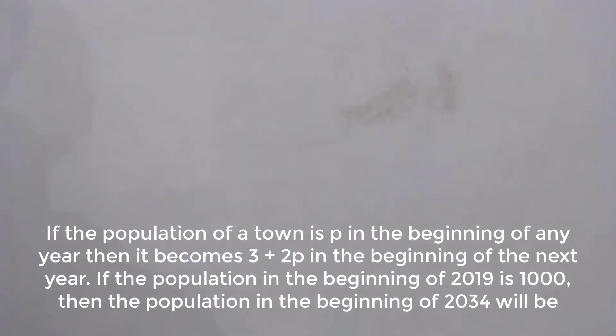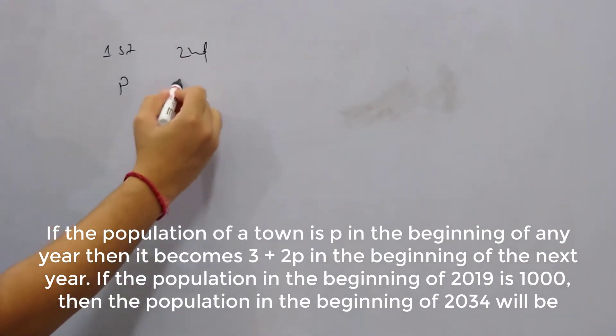If the population of a town is p in the beginning of any year, then it becomes 3 + 2p in the beginning of the next year. So population of a town is given: in the first year it's p, and in the second year it's 3 + 2p.